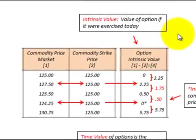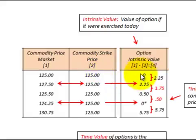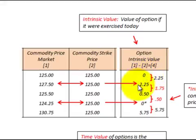To determine the intrinsic value of the option, we compare the market price to the strike price — the price at which we can purchase this commodity. In the first period, the market price is $125.00 versus a strike price of $125.00, so the difference is zero, which is the intrinsic value. In the next period, the market price is $127.50 versus the strike price of $125.00, giving a difference of $2.25. So the change between periods was from $0 to $2.25 — an increase of $2.25.